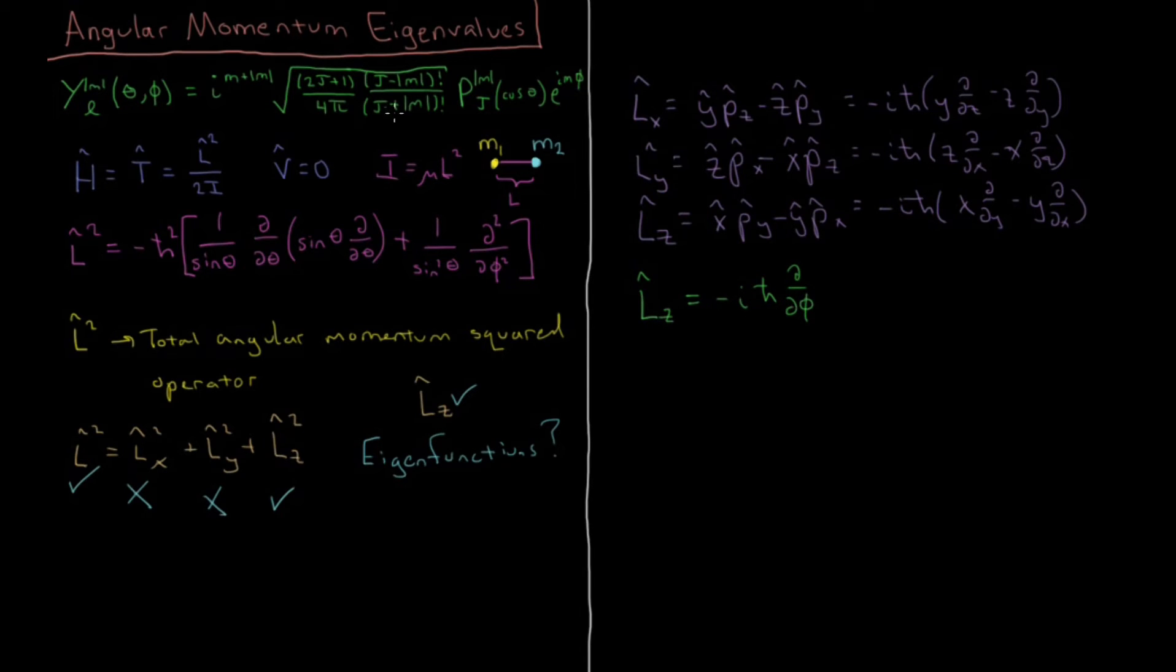And that's nice because the only part where M, or phi explicitly shows up in here is in this complex exponential, and the derivative with respect to it is really simple. We're just going to get an M to drop out.